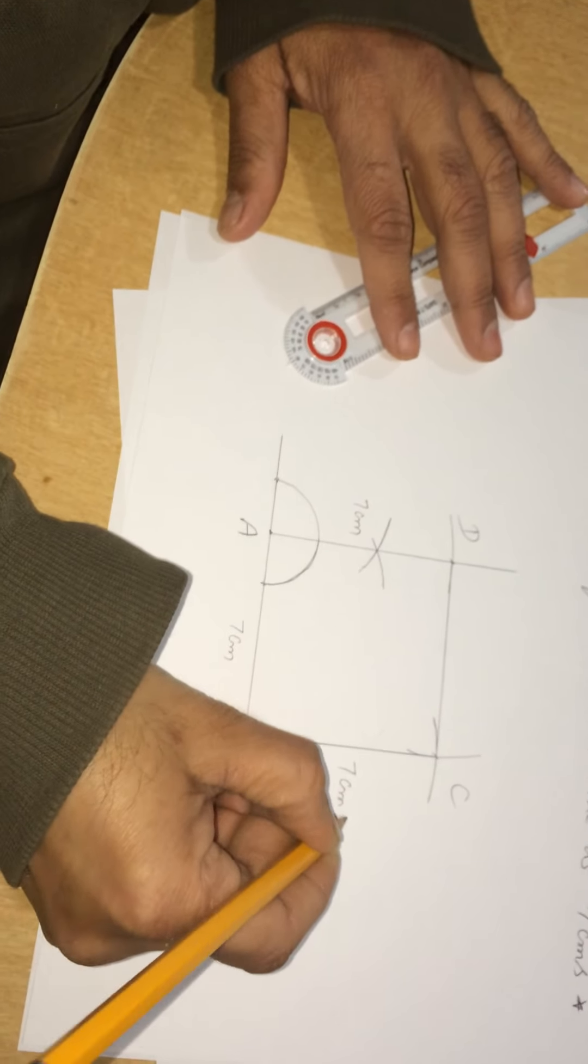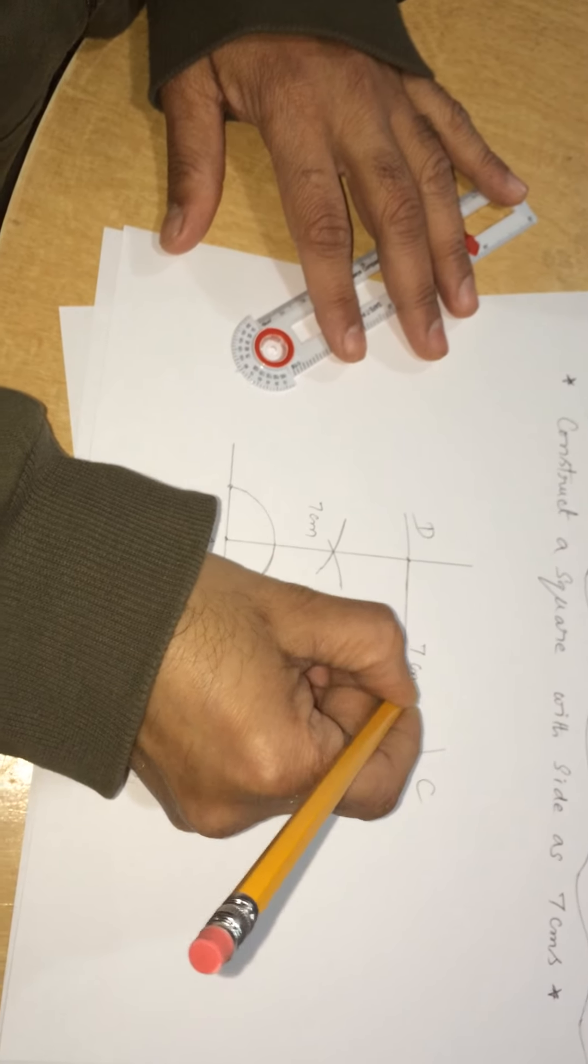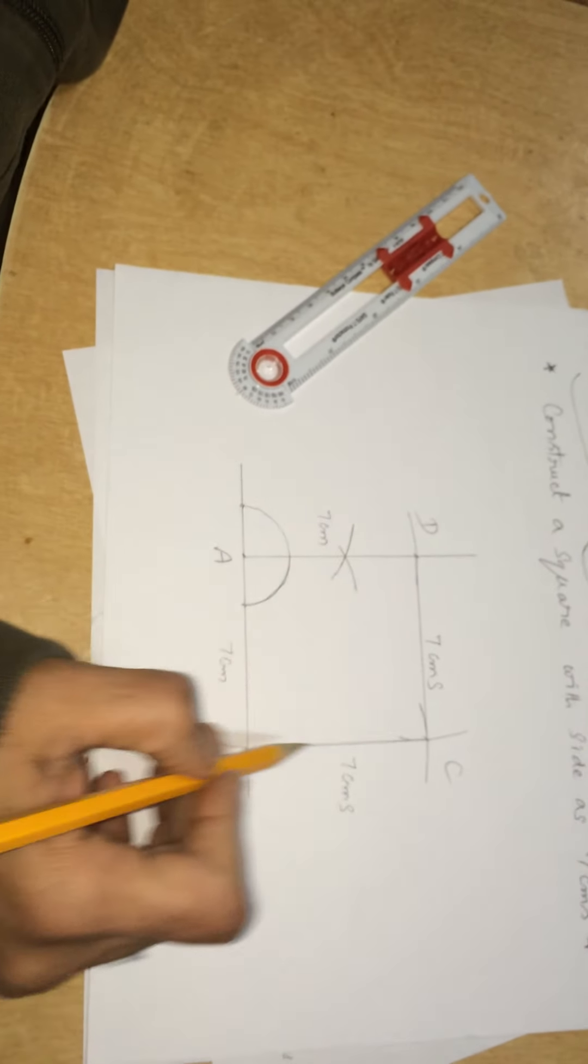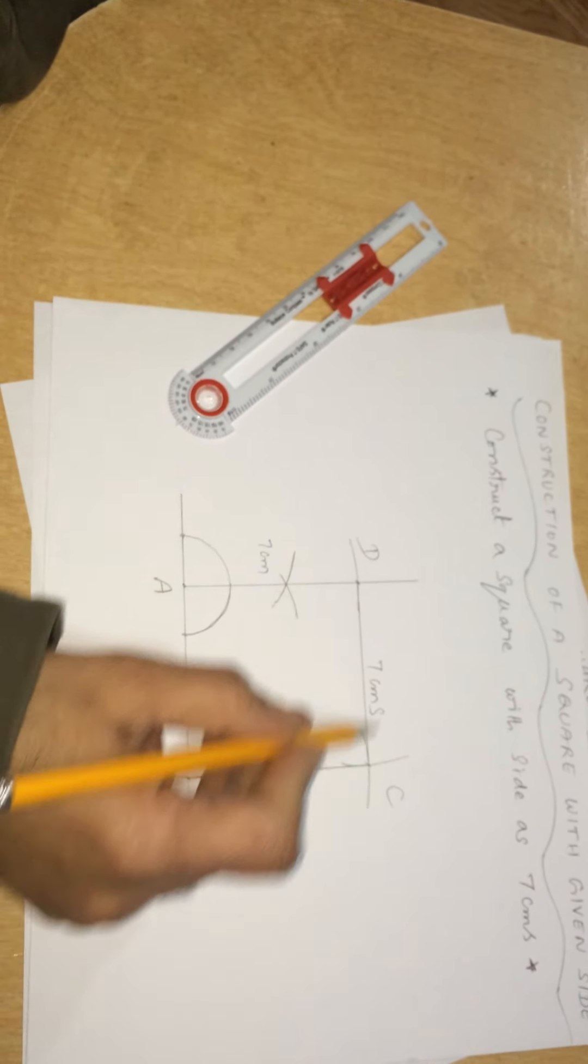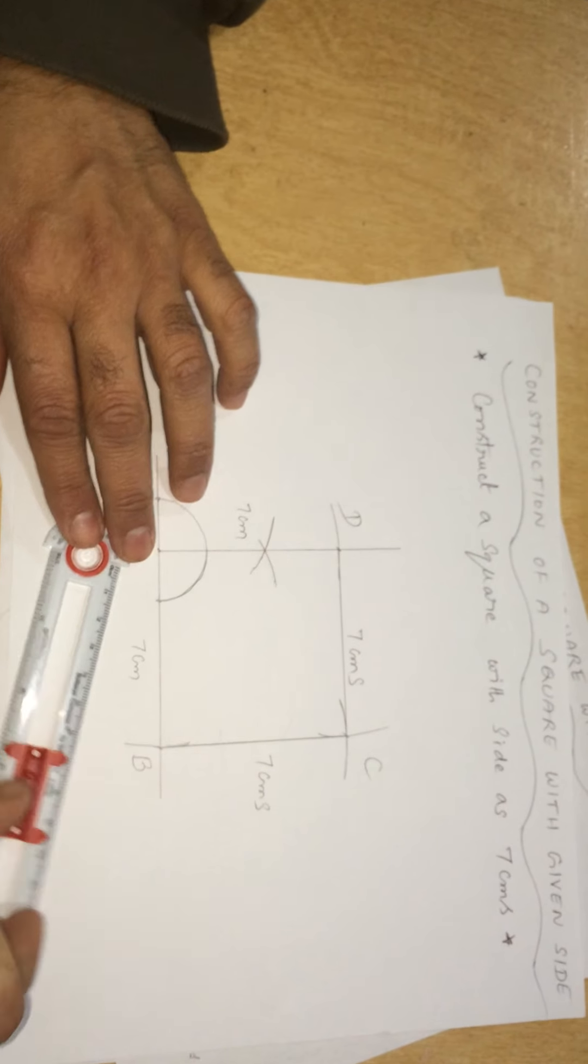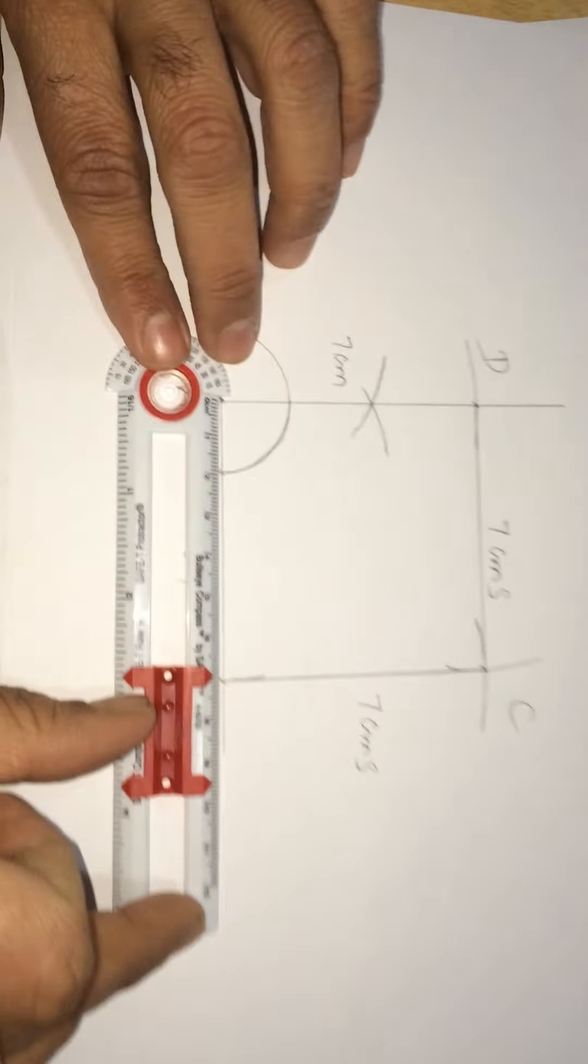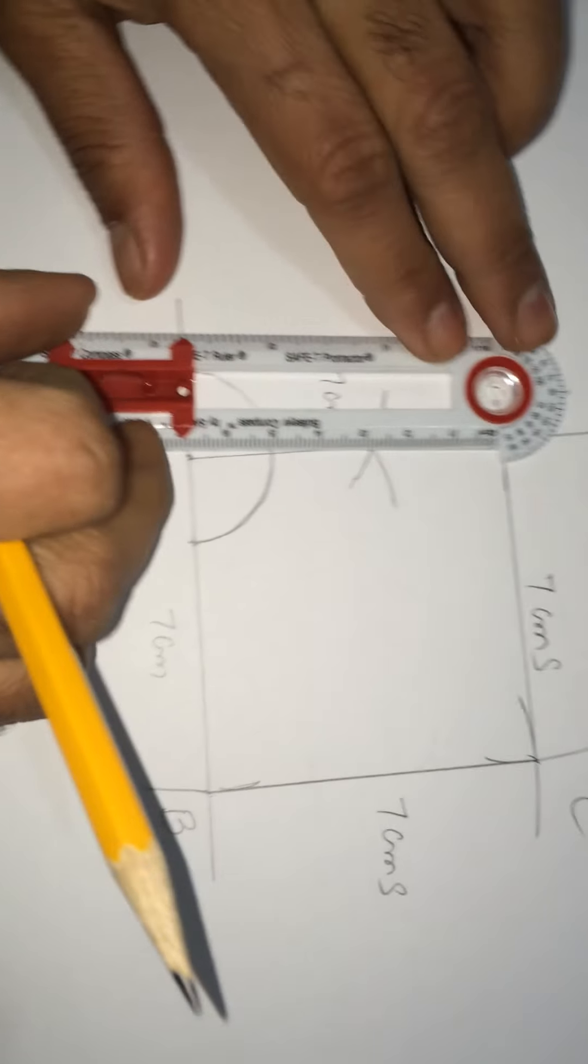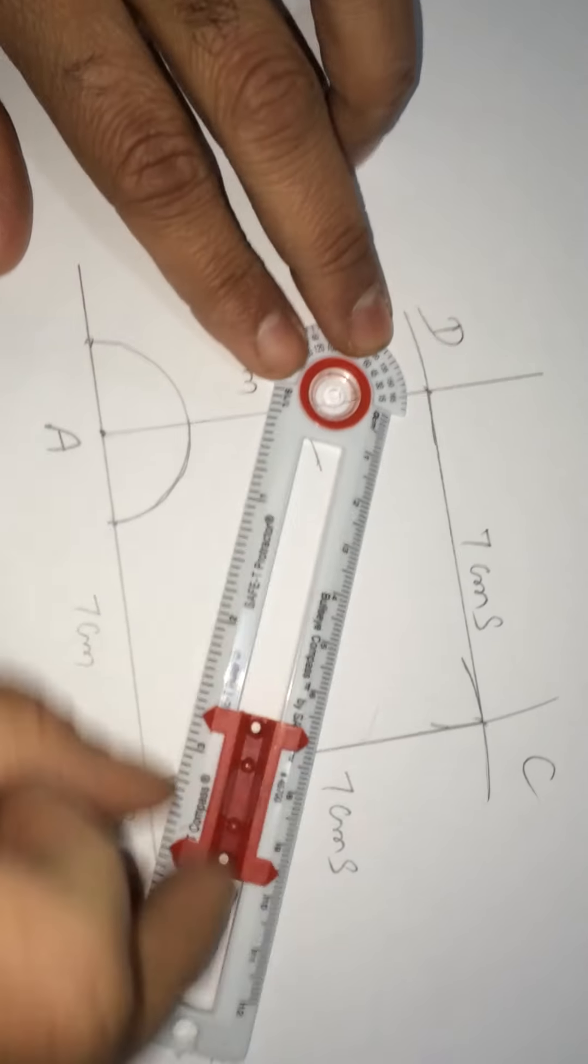Since it is 7 centimeters, the same arc. This is also 7 centimeters, and this is 7 centimeters, and this is 7 centimeters. In a square, all four sides are equal. That is why we got 7 and 7. If you measure, you will get the same length.